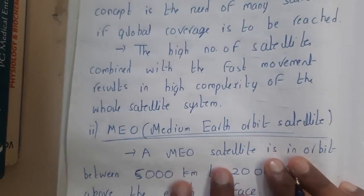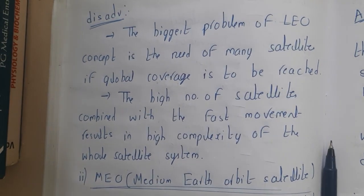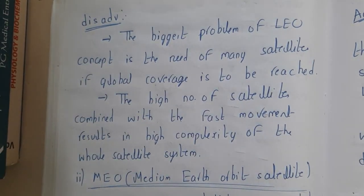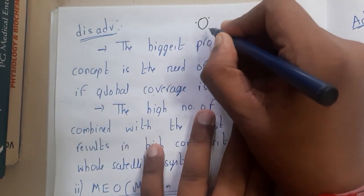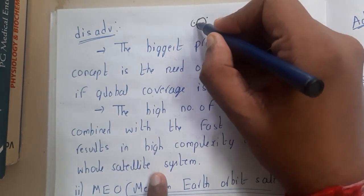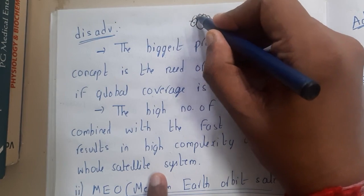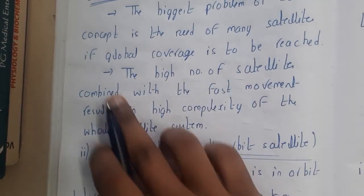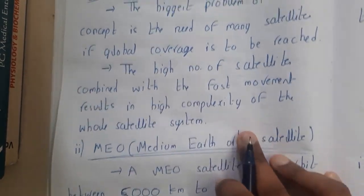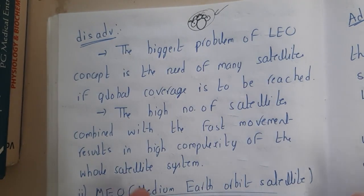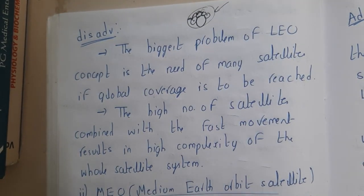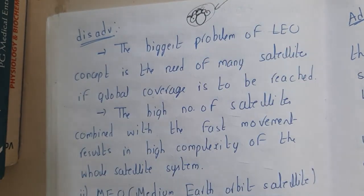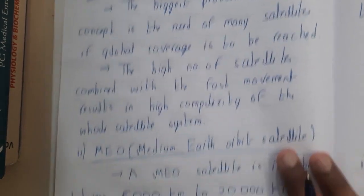The biggest disadvantage of LEO is that you need a lot of satellites to cover global coverage. To communicate with someone far away, a message must travel between multiple LEOs, which takes time and money. The high number of satellites combined with their fast movement results in high complexity, especially when hundreds of users are sending messages simultaneously without collisions.